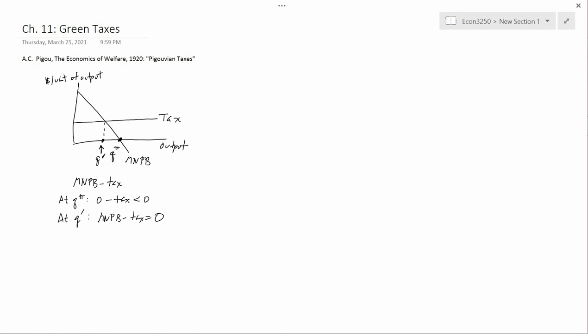Because beyond that point, to the right of Q prime generates marginal net benefit minus the tax which is negative. To the left, marginal net benefit minus the tax is still positive. For example, it's positive here. That's the gap, or it's positive here. The gap between MNPB and the tax.